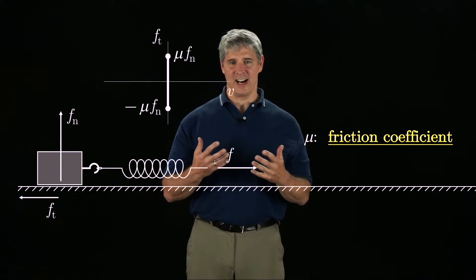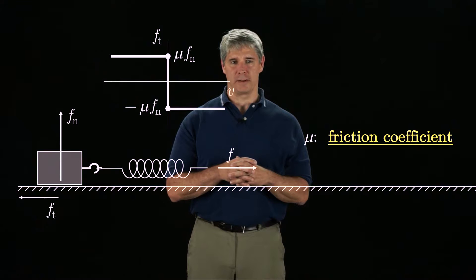When the sliding velocity is not zero, the magnitude of the friction force is mu Fn, and it acts in the direction opposite the sliding velocity.